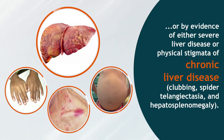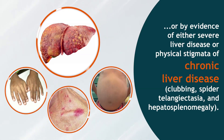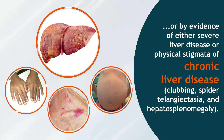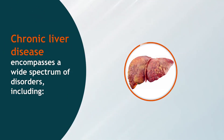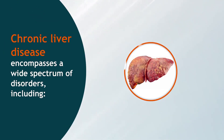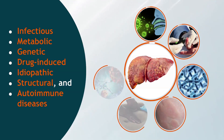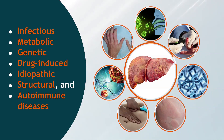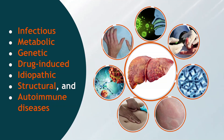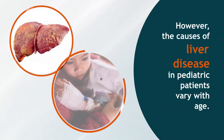Chronicity is also determined by evidence of severe liver disease or physical stigmata of chronic liver disease, including clubbing, spider telangiectasia, and hepatosplenomegaly. Chronic liver disease encompasses a wide spectrum of disorders including infectious, metabolic, genetic, drug-induced, idiopathic, structural, and autoimmune diseases.